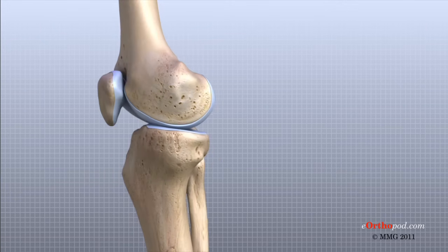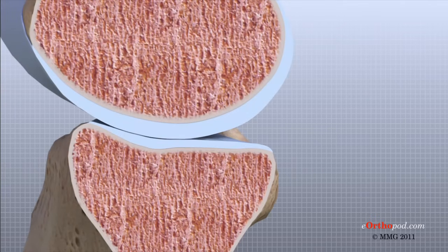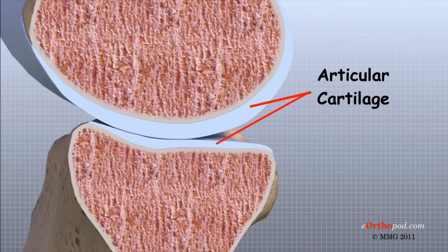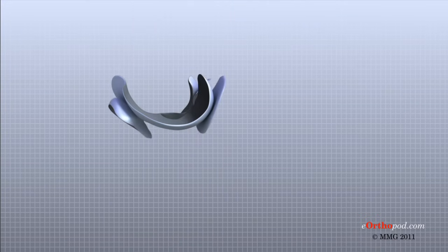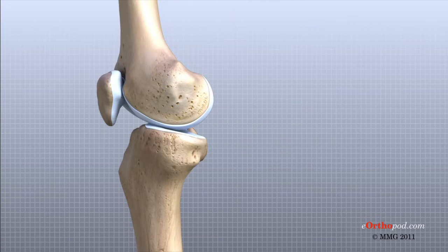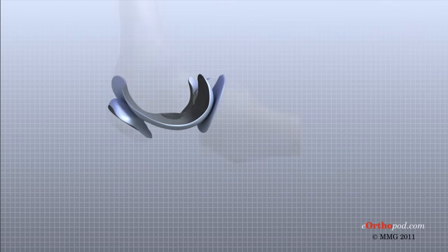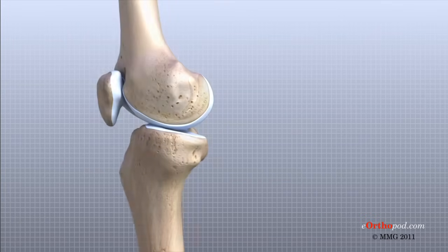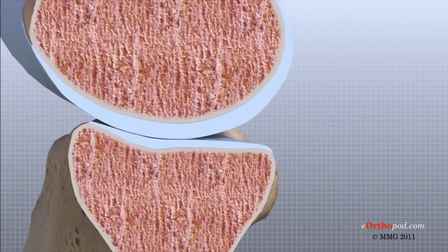Articular cartilage is the material that covers the ends of the bones of any joint. It is about one quarter of an inch thick in most large joints, white and shiny with a rubbery consistency. It is a slippery substance that allows surfaces to slide against one another without damage, functioning to absorb shock and provide an extremely smooth surface to facilitate motion. In the knee, articular cartilage covers the ends of the femur, the top of the tibia, and the back of the patella.